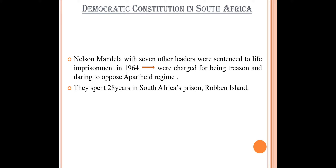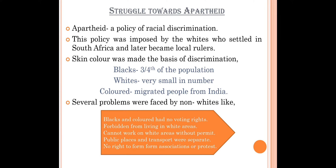Non-whites were discriminated against on the basis of their color. For example, all resources were used only for whites. The government was run by the whites, that is a minority government, and all work was done for their benefit. Blacks were ignored and suffered a lot. The racial discrimination was imposed by whites who had settled in South Africa and later became local rulers.